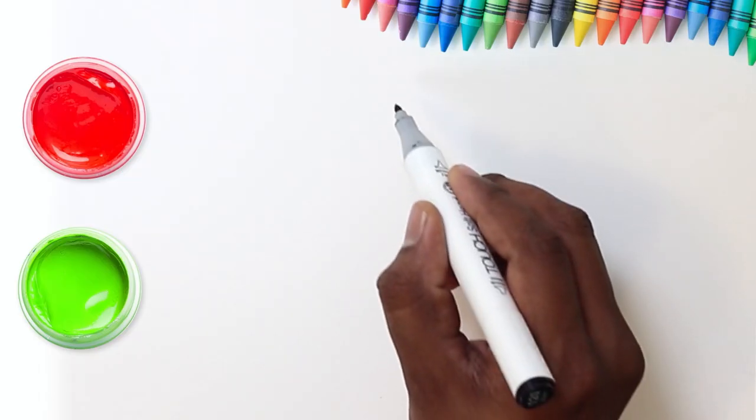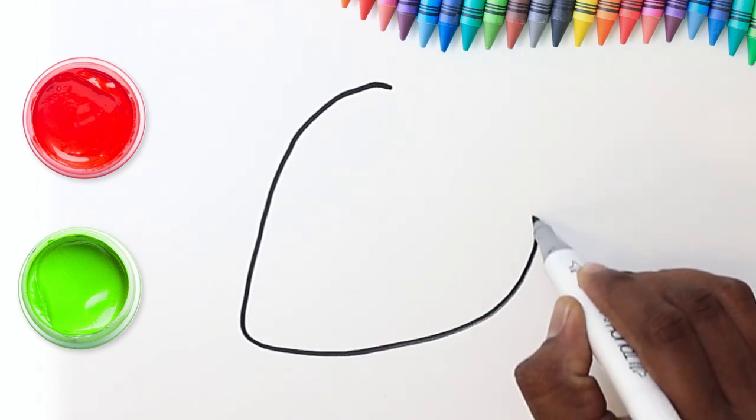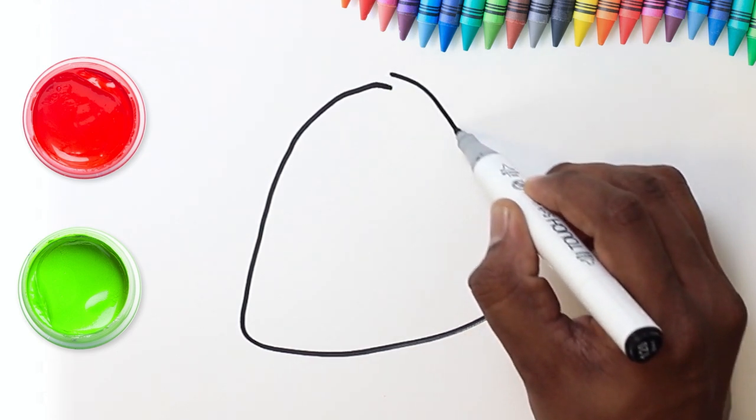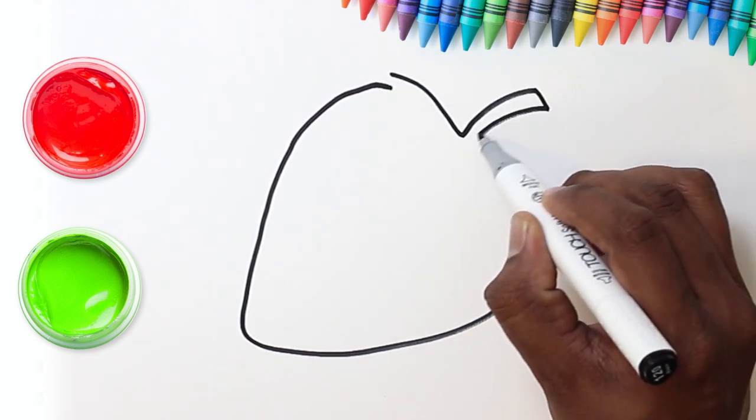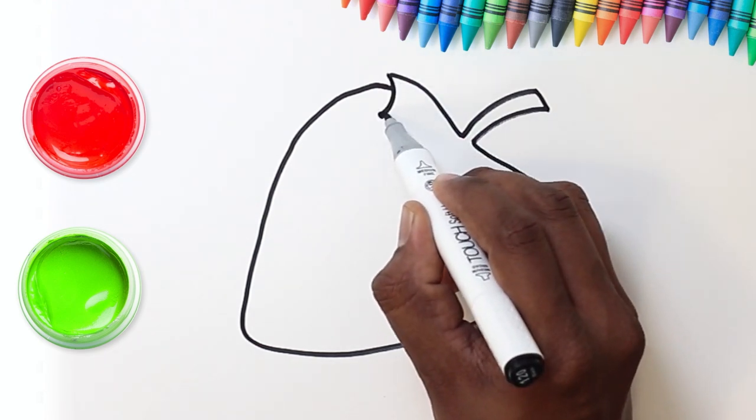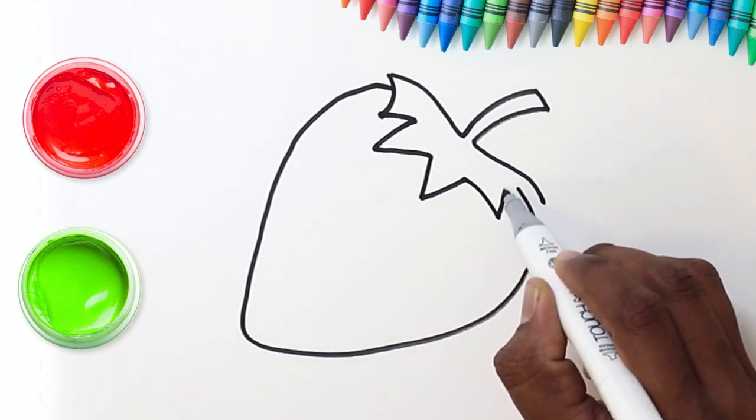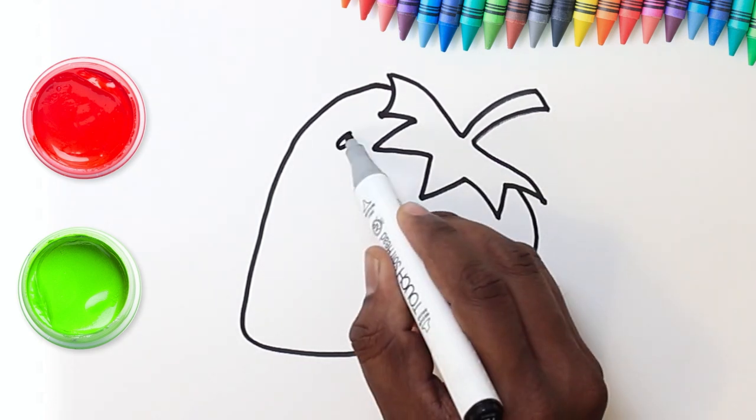Hello kids! Today we're going to draw a yummy, healthy strawberry. First, draw one curvy line and then another. Join them both at the top with a small stem. Now for the leaf. Just draw a line of small triangles. Yes, just like that. Time to draw the seeds.